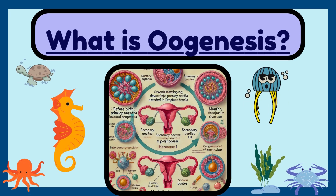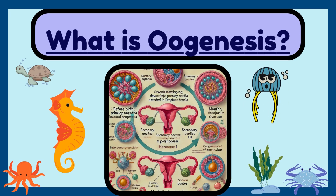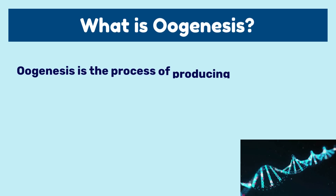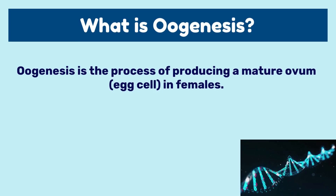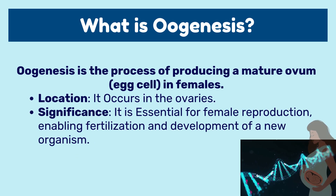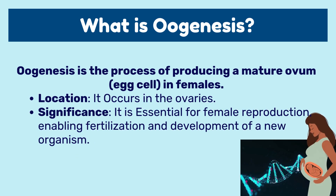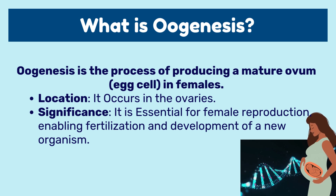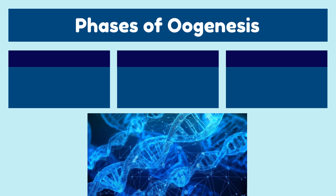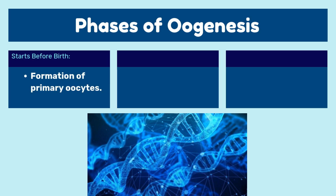In this video we will talk about what is oogenesis. Oogenesis is the process of producing a mature ovum, or egg cell, in females. Location: it occurs in the ovaries. Significance: it is essential for female reproduction, enabling fertilization and development of a new organism. There are three phases in oogenesis.